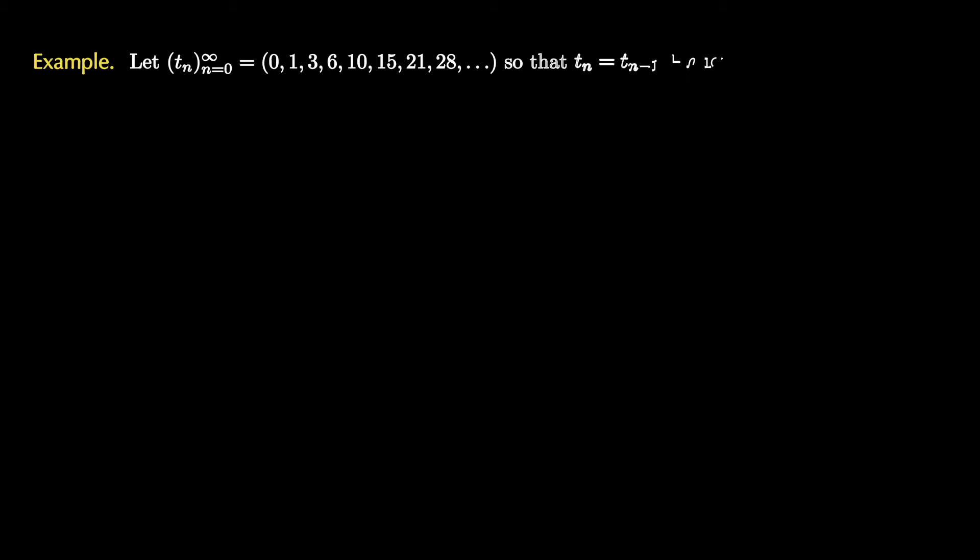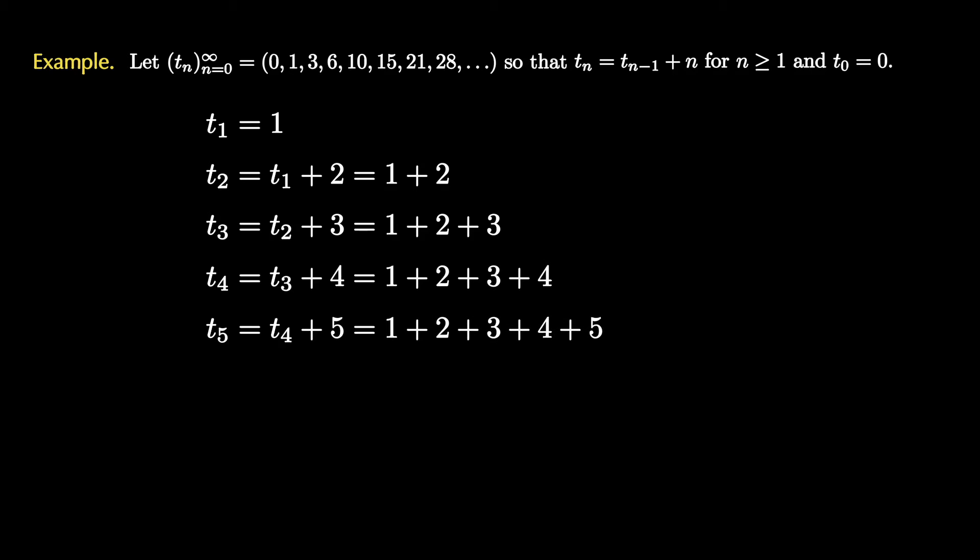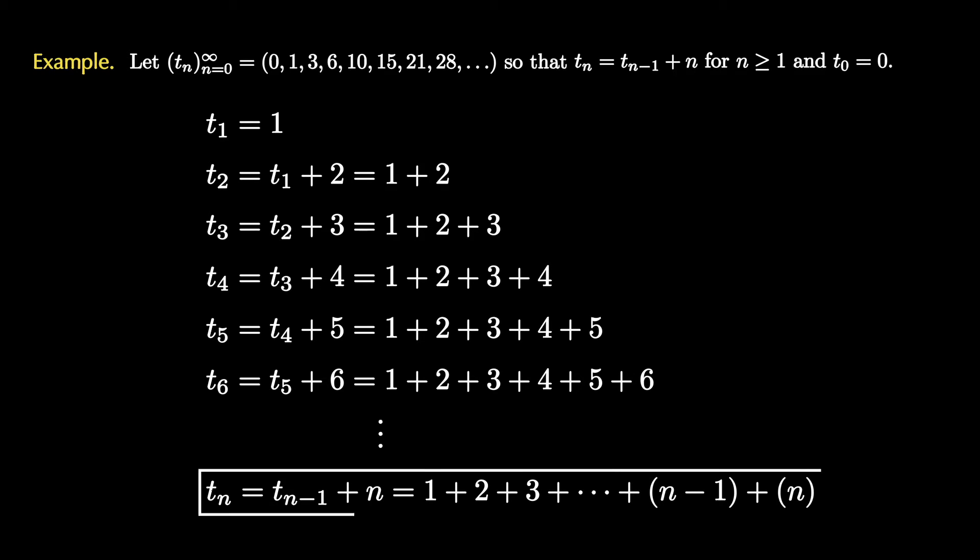Let's investigate this sequence a little bit more. From the recursive definition, we see that t₁ equals 1, t₂ is t₁ plus 2, but we can replace that by 1 plus 2. t₃ is equal to t₂ plus 3, but we can replace that by 1 plus 2 plus 3. Then t₄ is t₃ plus 4, but we can replace that by 1 plus 2 plus 3 plus 4. We can continue this pattern so that t₅ is 1 plus 2 plus 3 plus 4 plus 5, and t₆ is 1 plus 2 plus 3 plus 4 plus 5 plus 6. We see that in general, tₙ can be written as the running sum 1 plus 2 plus 3 all the way up to n. This is a formula where we just have to add all of the first n positive integers to get tₙ.